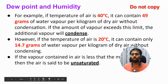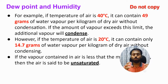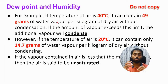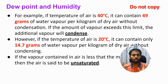For example, if the temperature of air is 40°C, it can contain 49 grams of water vapor per kilogram of dry air without condensation. One kg of dry air means air with no water vapor at all. At 40°C, we can add 49 grams of water vapor without condensation occurring. Condensation is water vapor converting into water droplets. If you add more than 49 grams to that one kilogram of dry air at 40°C, the excess water vapor will start to condense into water droplets.